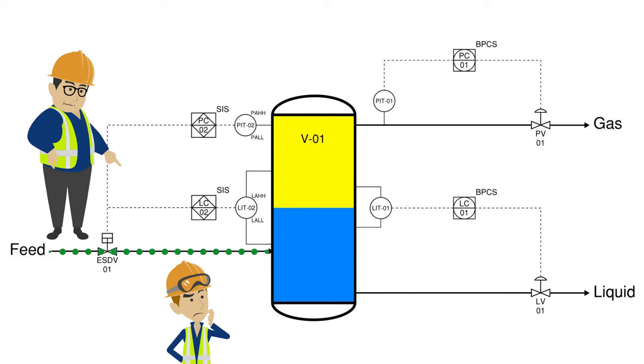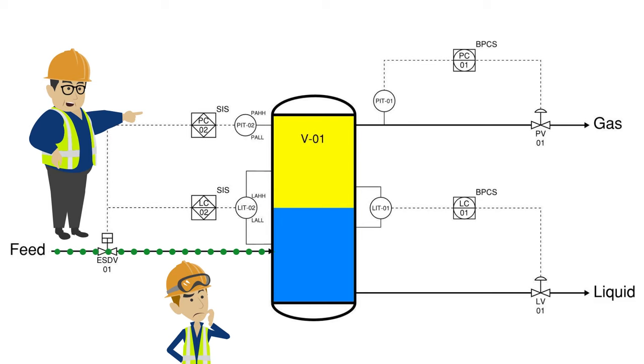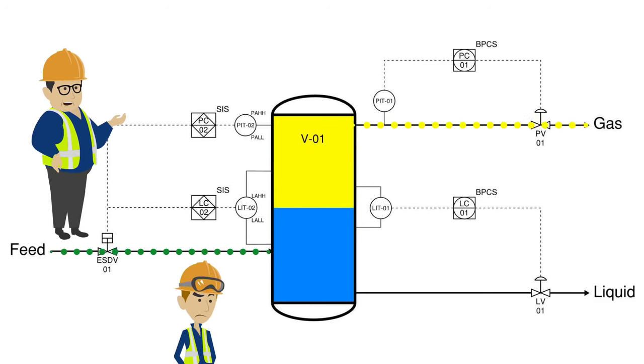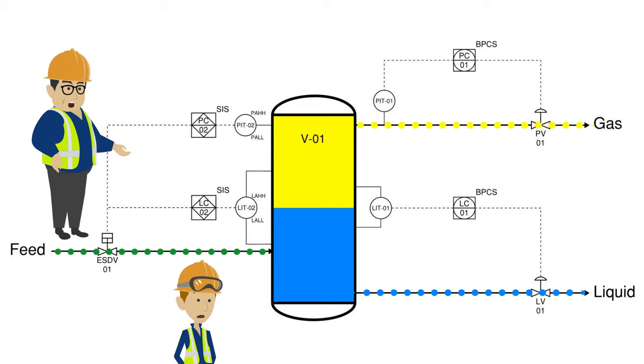This two-phase feed of liquid and gas is supplied to V-1, which separates the liquid and gas, with the gas stream leaving out of the top of the vessel and liquids out of the bottom. Now, let's look at the level control loop on V-1.